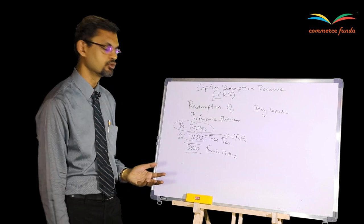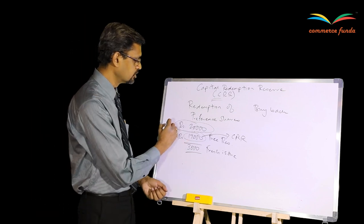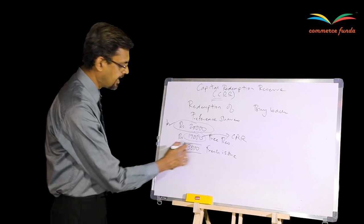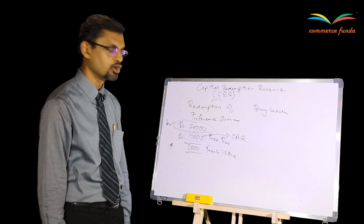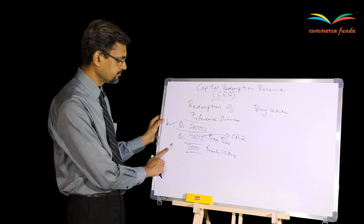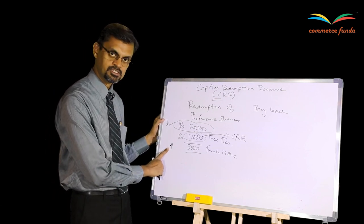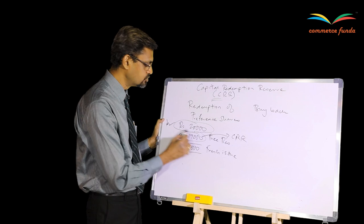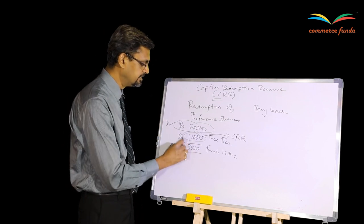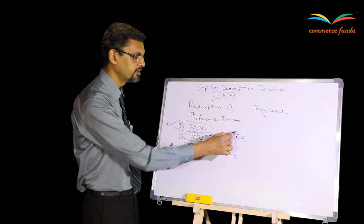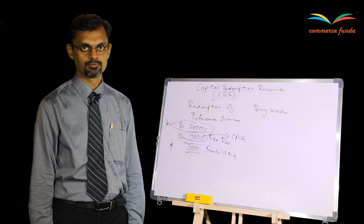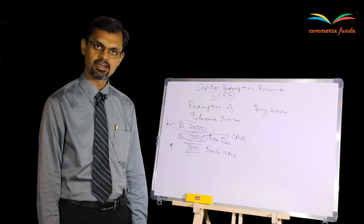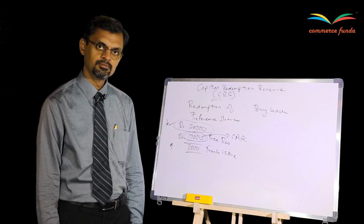When ₹17,000 is transferred to CRR: on one hand your share capital is going down by ₹20,000 because you are redeeming the preference shares; on the other hand you are increasing share capital by ₹3,000 because of the fresh issue. So net, your share capital is coming down by ₹17,000, which increases risk for the lenders. Therefore, these ₹17,000 must be compulsorily transferred from the free reserves account to the Capital Redemption Reserve account.